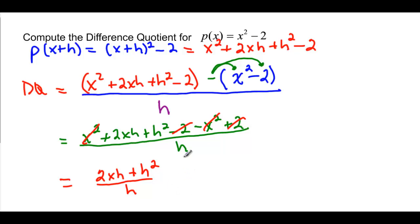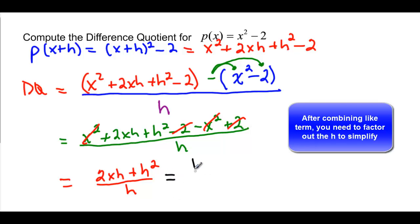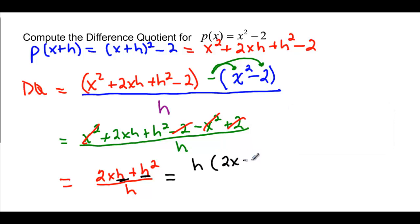I still have to simplify. So when I simplify, I'm going to factor. I have a common factor of h in these two. That leaves me with 2x, because the h is on the outside, plus a factor of h on the inside. And then that's all over h. Finally, to get my final simplification here, the h's cancel and our difference quotient is 2x plus h. Lots simpler than what we started out with.